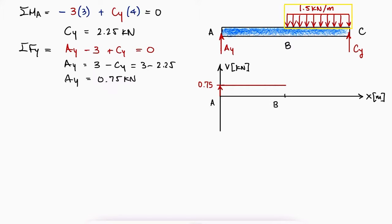...and have a slope of minus 1.5 for 2 meters till it reaches C. The slope of 1.5 for 2 meters would yield a rise value of minus 3 that starting from 0.75 results in minus 2.25. At C, we would find the reaction force CY that goes up by 2.25.